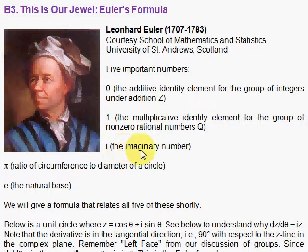Then we have i, the imaginary number. We have π, the ratio of the circumference of a circle to the diameter of a circle, and e, the natural base.